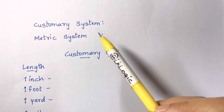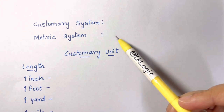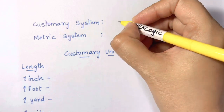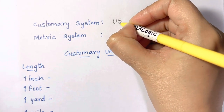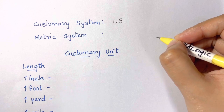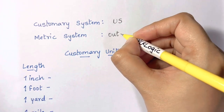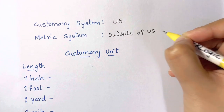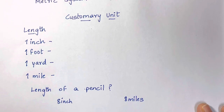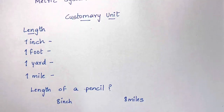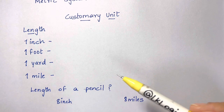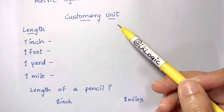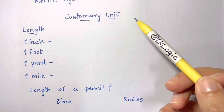In this video we are going to learn about the customary measurement system and the metric measurement system. The customary measurement system is primarily used in the US, while the metric system is used in science and outside of the US. Some customary units include inch, foot, yard, miles, ounce, and pounds. In metric units you have grams, kilograms, centimeters, meters, and so on.